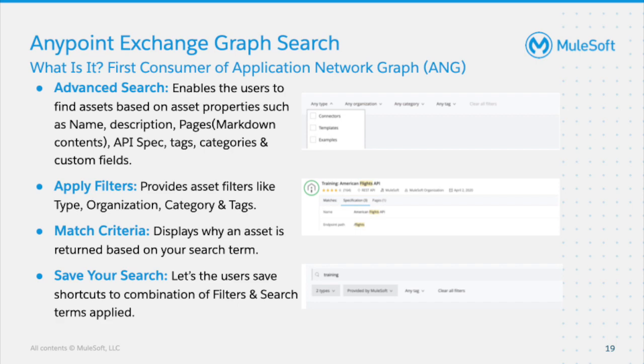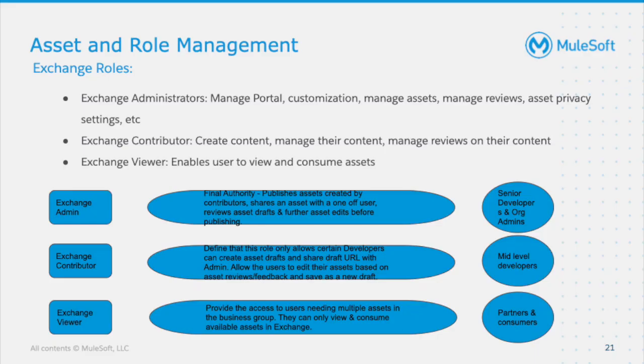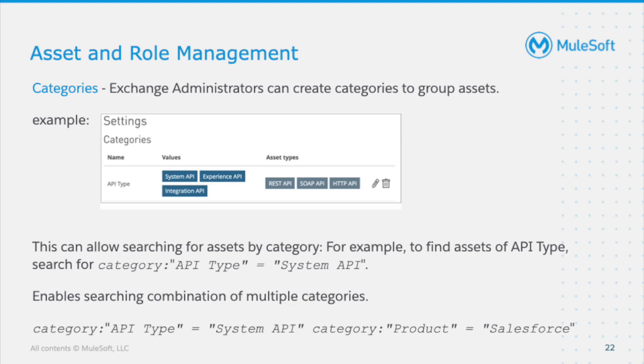Now let's deep dive into best practices of Exchange management. Exchange has three types of roles accessible via Access Management in Anypoint Platform: Exchange Admin, Exchange Contributor, and Exchange Viewer. An admin can manage the public portal, create and customize dashboards, add pictures, manage reviews, and set privacy settings for each asset type. A contributor creates and manages their own content and reviews. An Exchange Viewer is like a consumer who simply wants to use a particular API — they can consume assets with this role.